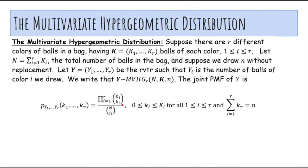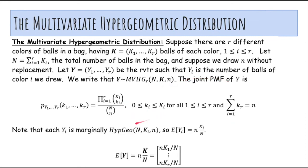And then for each color, you have big K_i balls of that color, and you need to choose little k_i balls to match the requirement. And these requirements are again the same. So all the little k_i's are in the range from zero to the total number of balls of the color. And notice that each Y_i is marginally hypergeometric because you can just consider balls of the color or not of the color.